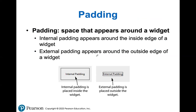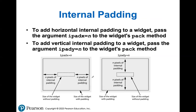Padding is another very useful thing. Padding is the space we can reserve around our text. Internal padding is the space inside of our border. External padding is the space outside of our border. You can specify how many pixels you want it to be. For internal padding horizontally you use iPad X, and for vertical pixels you use iPad Y. You specify how many pixels instead of the N number.